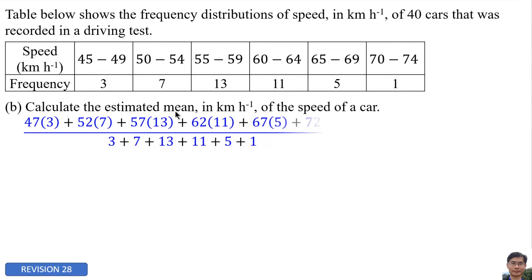We use the midpoint: 47 times 3 plus 52 times 7 plus 57 times 13, and so on. And this one is the total frequency.